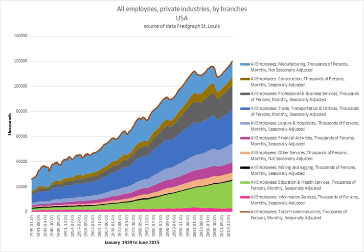Organizational justice is an employee's perception and judgment of employers' treatment in the context of fairness or justice. The resulting actions to influence the employee-employer relationship is also a part of organizational justice.